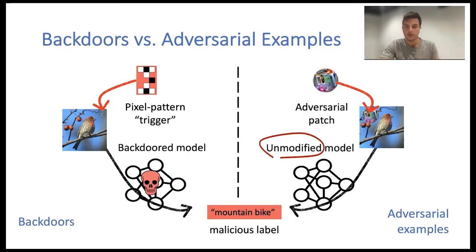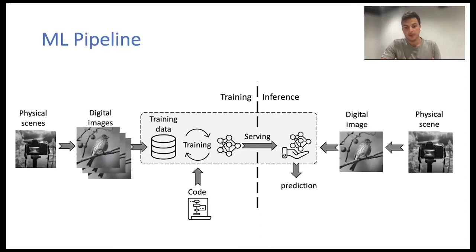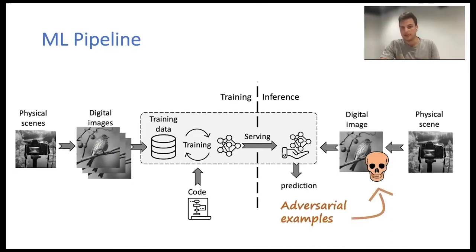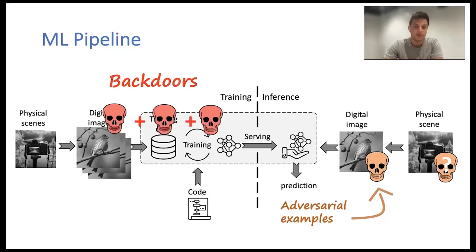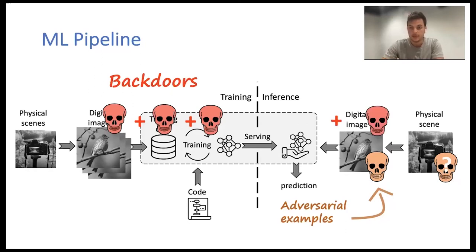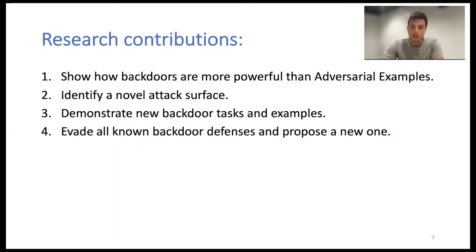So why would we even want to modify the model? If we look at the machine learning pipeline — collecting data, training the model, and serving it on new data — adversarial examples exist when you modify the input at inference time or modify the physical scene. Whereas with backdoors, you need to modify the training data and also modify the input at inference time. In this work, we show that backdoors can be much more powerful than adversarial examples.